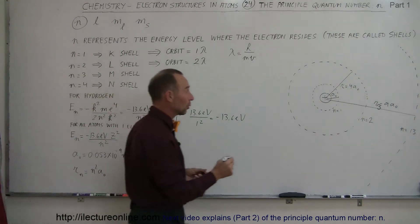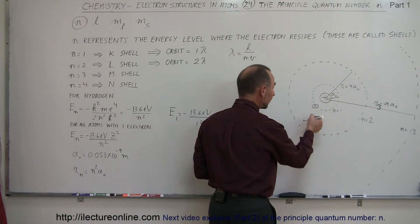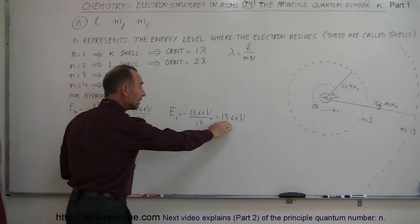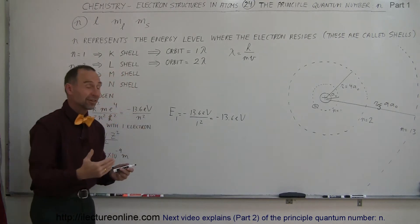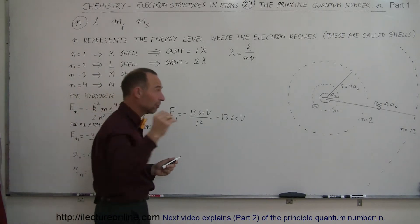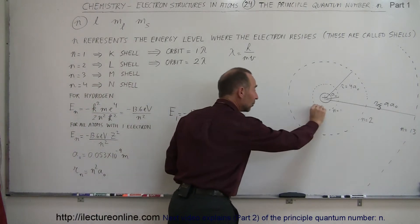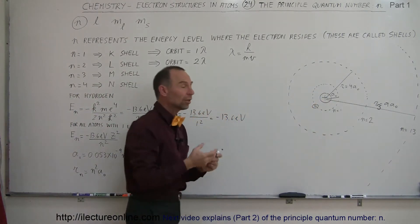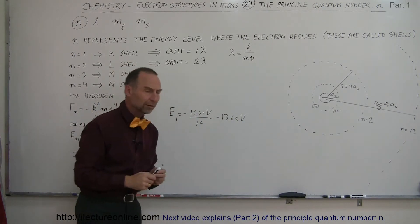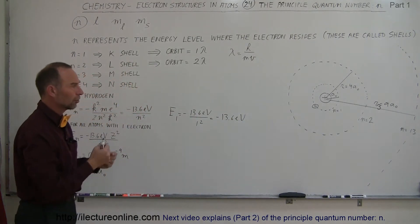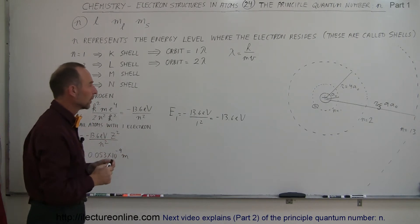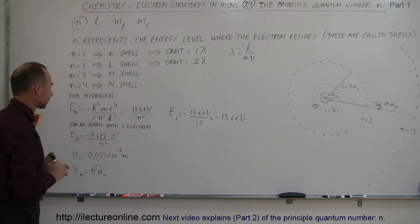So if an electron resides in that innermost level and you want to move it away from the nucleus, you would have to donate 13.6 electron volts of energy to get it away. Conversely, if you have a free electron that flies into the atom and resides in the innermost energy level, it would release a photon of 13.6 electron volts. That's what we mean by the energy state of a particular shell.